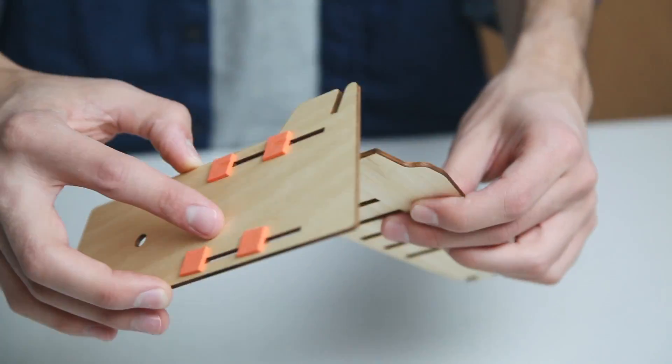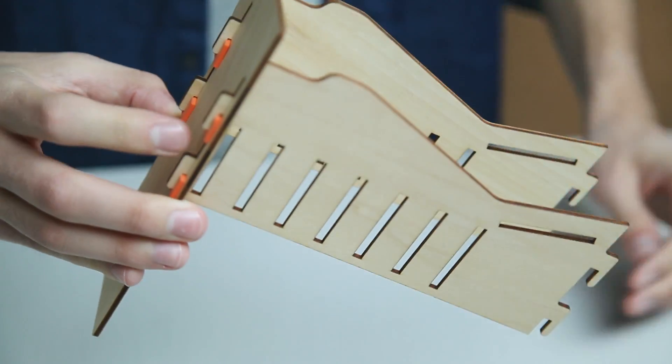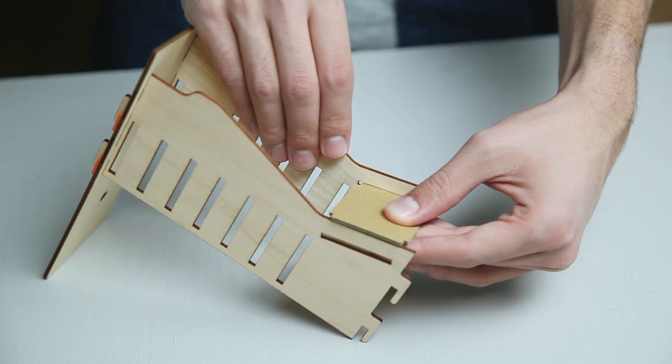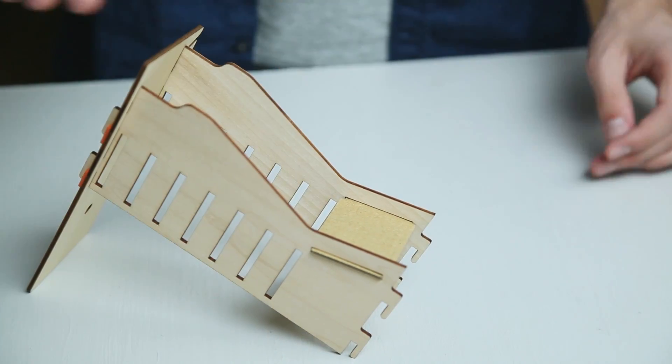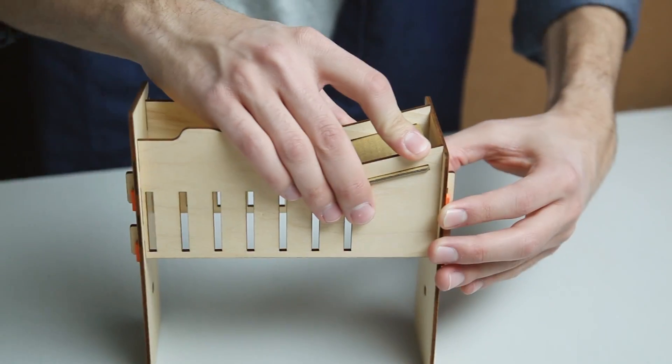Now take your tall support piece and flip it over. Slide each of the sidewalls into the slits and press them down to lock them in place. Grab the rectangular cardboard brace and place it into the angled slits between the two sidewalls. Slide the walls into the slits in the short support piece and press down.